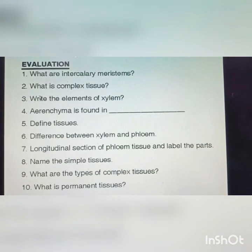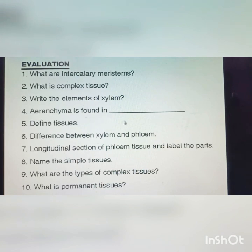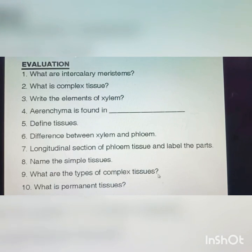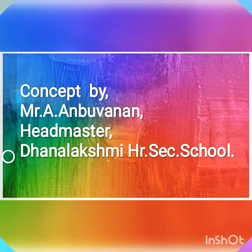Now for review: What are intercalary meristems? We can see meristematic tissue — apical, intercalary, lateral meristem. What is complex tissue? Xylem and phloem are complex tissues. Write the elements of xylem. Where is parenchyma found? Define tissue. What is the difference between xylem and phloem? Draw the longitudinal section of phloem tissues and label the parts. Name the simple tissues. What are the types of complex tissues? What are permanent tissues? You can copy and test — very useful. Thank you students. To be continued.